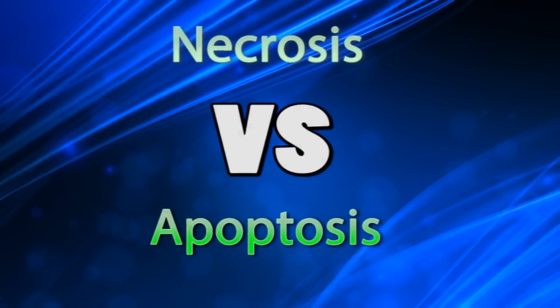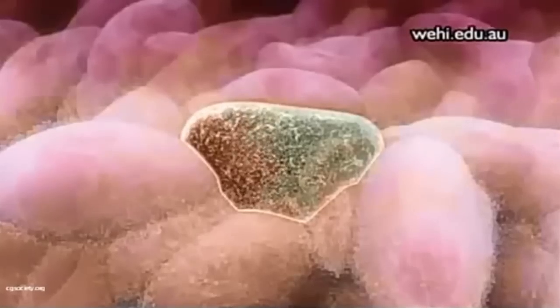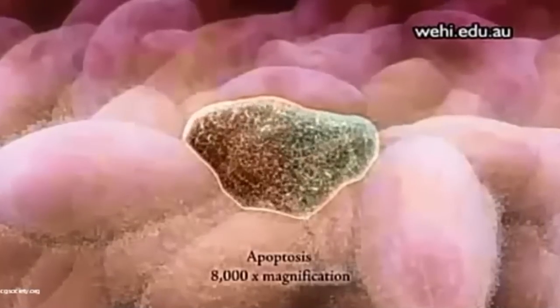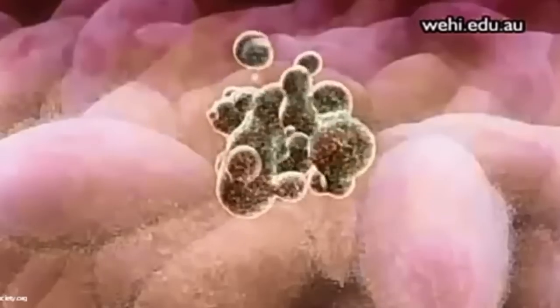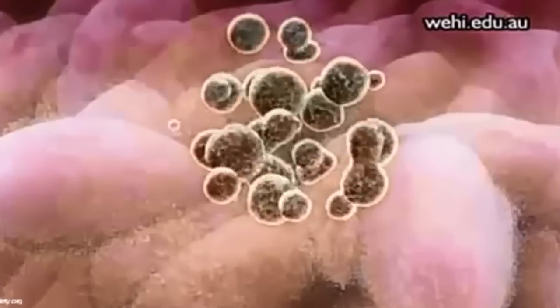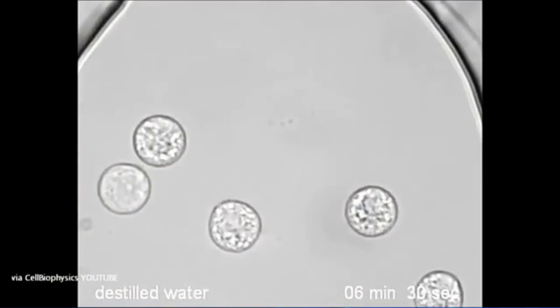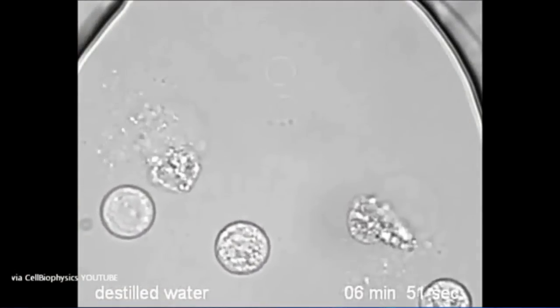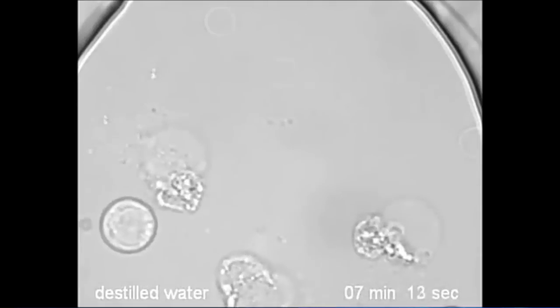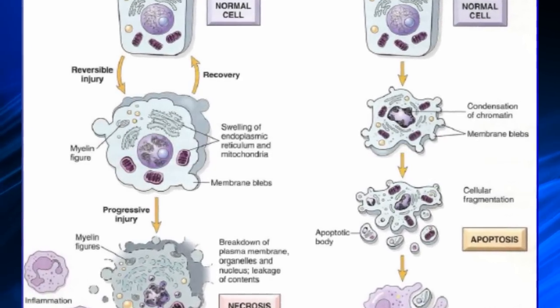Necrosis versus apoptosis. Apoptosis is a physiological response in which cells are eliminated when they are no longer required by the body. It is programmed cell death in response to external or internal stimuli. Necrosis is a pathological process that occurs when cells are exposed to serious chemical or physical agents. The cell and cellular organelles swell and rupture to release cellular contents. These two processes have a number of differences.